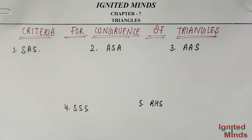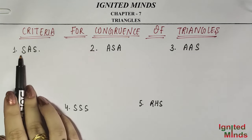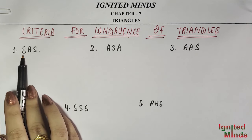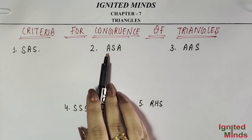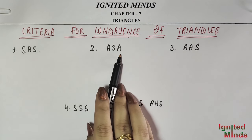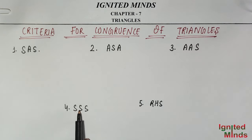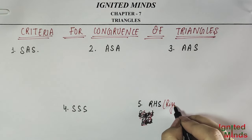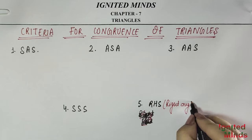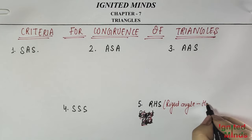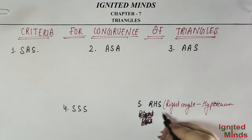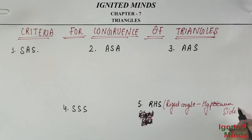First of all, I will tell you the full forms. S for Side, A for Angle, S for Side — so SAS is Side Angle Side. ASA is Angle Side Angle. AAS is Angle Angle Side. SSS is Side Side Side. And RHS — R for Right Angle, H for Hypotenuse, S for Side — so RHS is Right Angle Hypotenuse Side.